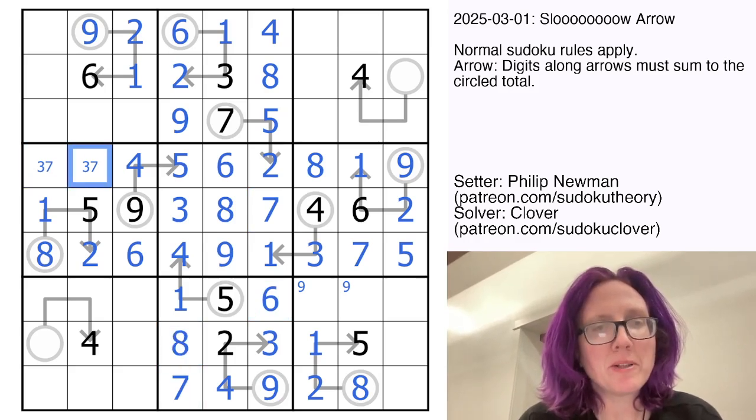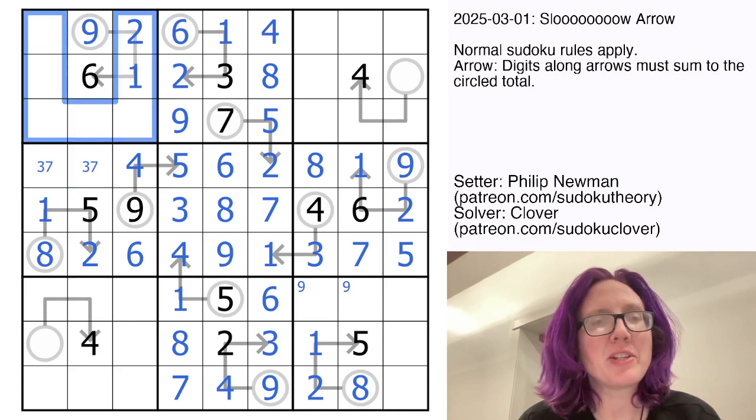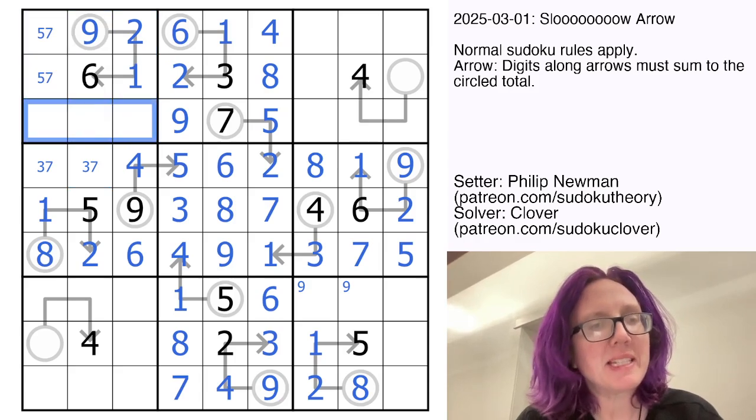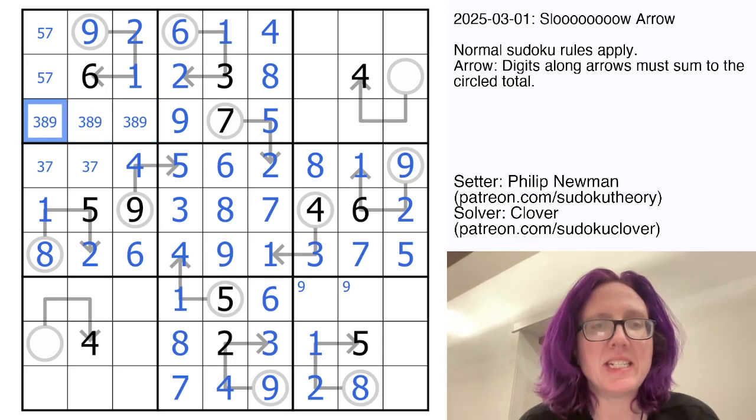That can't be a four. We need to place a five and seven in this region. They can't go in any of these cells, so they'll have to go into these two cells, meaning that these three cells contain three, eight, and nine.